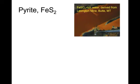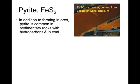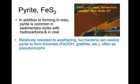Pyrite has very important environmental consequences. In pyrite-rich ores, it can weather to form iron sulfate-rich water — for example, the reddish-brown muck in the water shown in the upper right, derived from weathering of pyrite-rich ores in the Lexington mine at Butte, Montana. In addition to forming in ores, pyrite is very common in sedimentary rocks with hydrocarbons or in coal beds. Relatively resistant to weathering, pyrite can oxidize — particularly by bacteria — to form limonites: ferric iron hydroxides such as goethite and lepidocrocite, often forming as pseudomorphs of the original pyrite cubes.